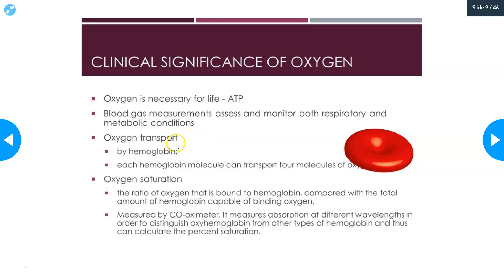Oxygen is transported in the blood by hemoglobin. Each hemoglobin molecule can transport four molecules of oxygen. The oxygen saturation is the ratio of oxygen bound to hemoglobin compared with the total amount of hemoglobin capable of binding oxygen. We rarely walk around with completely 100% saturation — it's quite normal to be 96%, 97%, or 98% saturation. It is usually measured by a co-oximeter, which measures absorption at different wavelengths to distinguish between oxyhemoglobin and other types of hemoglobin — deoxyhemoglobin, methemoglobin, sulfhemoglobin — and then calculates the percentage saturation.